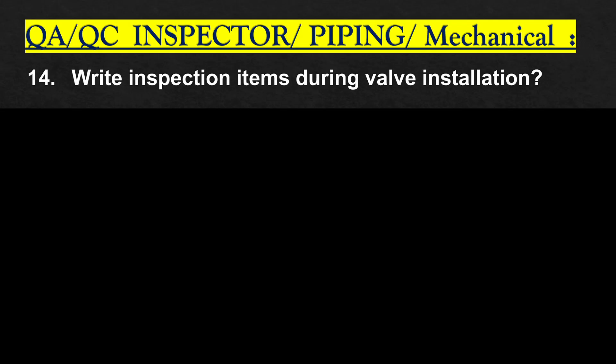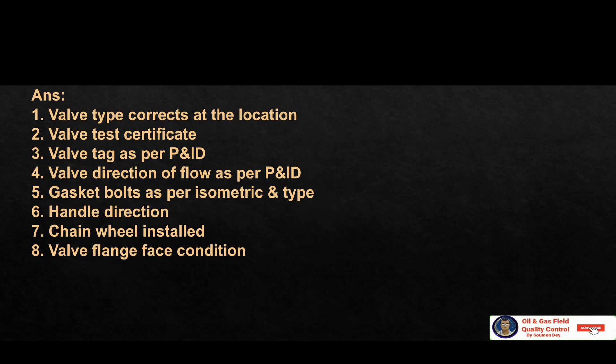Write inspection items during valve installation: valve type correct at the location; valve test certificate; valve tag as per P&ID — piping and instrumentation diagram; valve direction of flow as per P&ID; gasket and bolts as per isometric drawing and type; handle direction; chain wheel installed; and valve flange face condition.